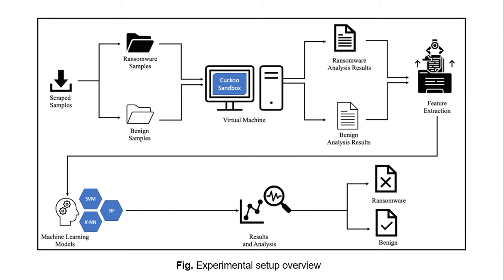This figure shows the experimental setup of this paper. After the collection of samples, they are input serially into the Cuckoo sandbox to receive an automated analysis report for each individual file as a report.json. Both reports are combined, features are extracted, and they are passed to a machine learning model, which predicts whether the file is malicious or not.